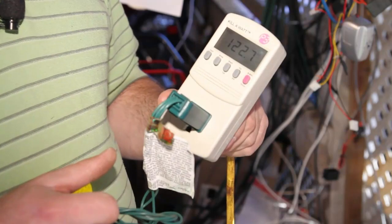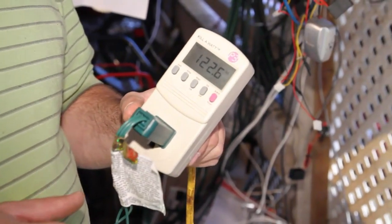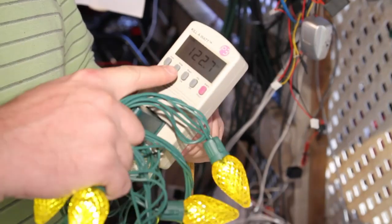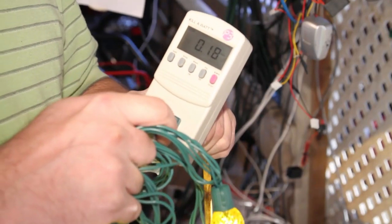Most residential electrical breakers are capable of handling up to 15 amps of power. As you can see by the meter here, we are currently drawing 0.2 amps of electrical power.